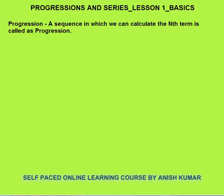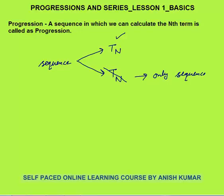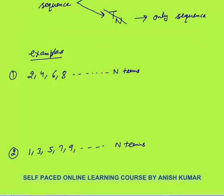Next, what is a progression? A sequence in which we can calculate the nth term. Progression is derived from the sequence. Sequences are of two types: the first type are those in which we can calculate the nth term, Tn, and the second are those in which we can't find the nth term. If we can find the nth term, it will be called a sequence as well as a progression.